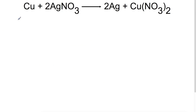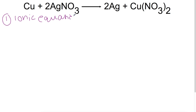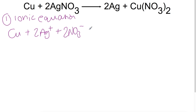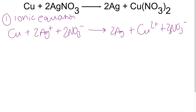Here is a redox equation for the reaction between copper and silver nitrate. We need to try and find the reducing and oxidising agents. Step one is to write an ionic equation: copper plus two silver ions plus two nitrate ions gives two silver atoms plus a copper ion plus two nitrate ions. If you are unsure how to write ionic formulae, have a look at the National 5 video on ionic formulae.